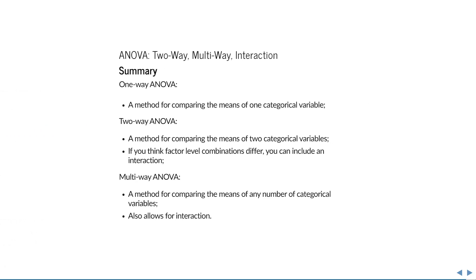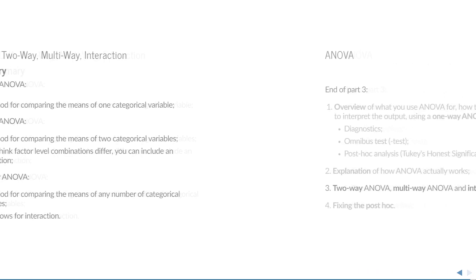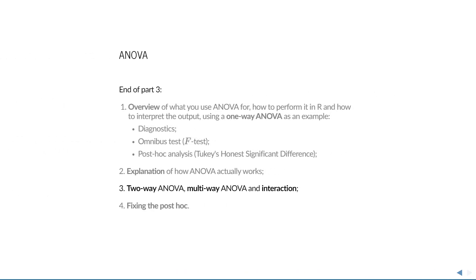In summary, we have one-way ANOVA to compare the means of all categories of a single variable, two-way ANOVA to compare the categories of two categorical variables, and multi-way ANOVA to compare the categories of any number of categorical variables. For two-way and multi-way, if you believe combinations of categories to be different, you should include an interaction. That concludes part three of this series.